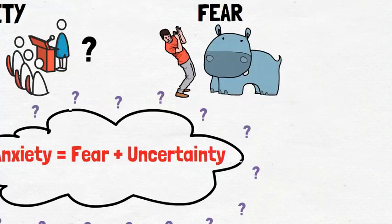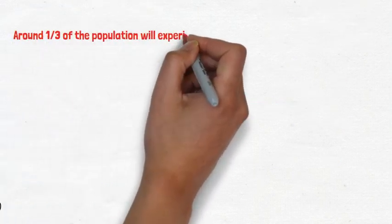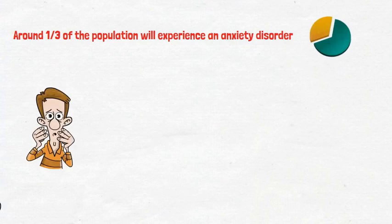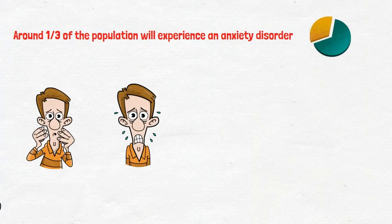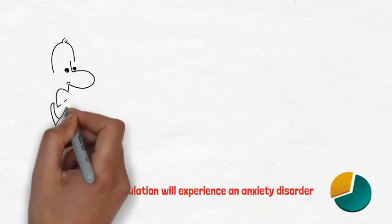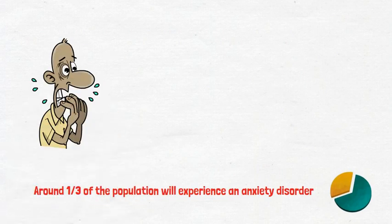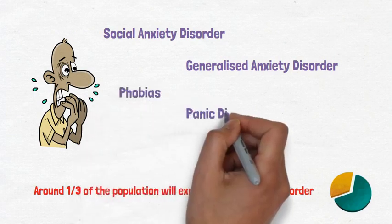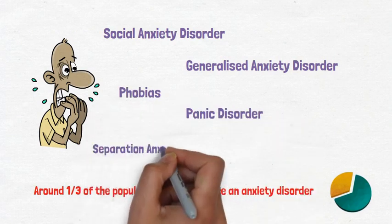While anxiety is a very normal human emotion, around one-third of the population will experience an anxiety disorder at some stage during their lives, meaning that there is significant functional impairment as a result of their anxiety symptoms. There are many different kinds of anxiety disorders, which are primarily categorized based on what triggers a person's anxiety. For example, social anxiety disorder, generalized anxiety disorder, and specific phobias.